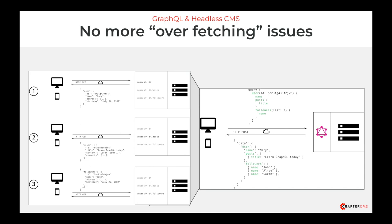In this example, on the left we have a client making multiple REST API requests and getting back fixed responses. And on the right, we have a single GraphQL request being sent, and it's getting back just the data it asked for and no more.